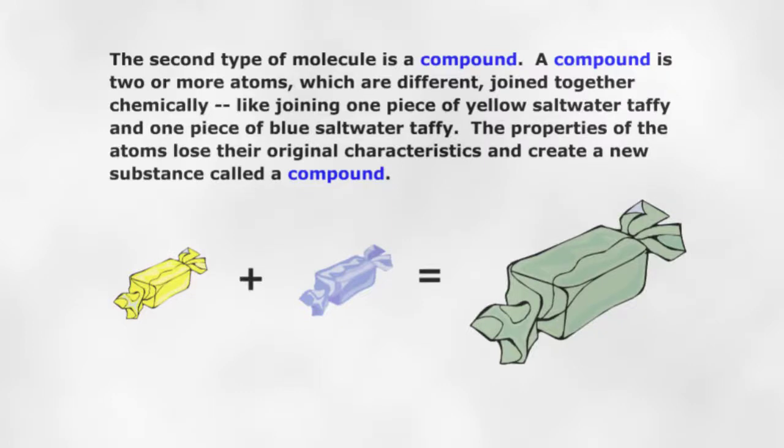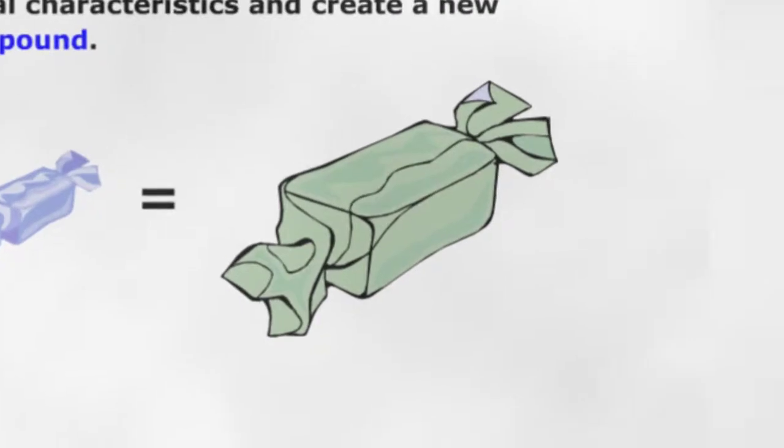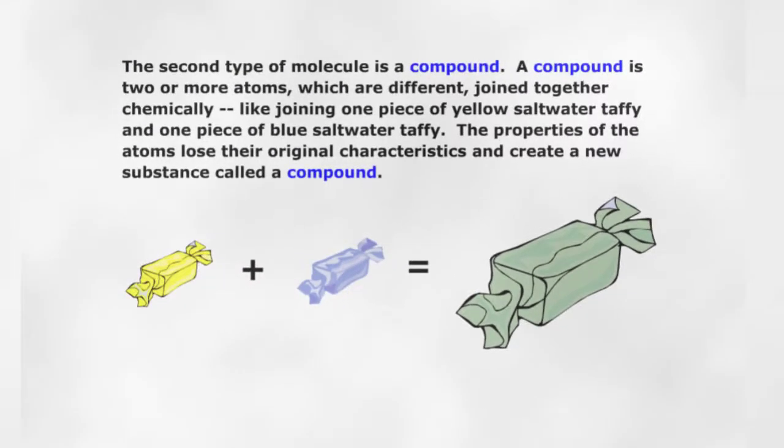The second type of molecule is a compound. A compound is two or more atoms which are different joined together chemically, like joining one piece of yellow saltwater taffy and one piece of blue saltwater taffy. The properties of the atoms lose their original characteristics and create a new substance called a compound.